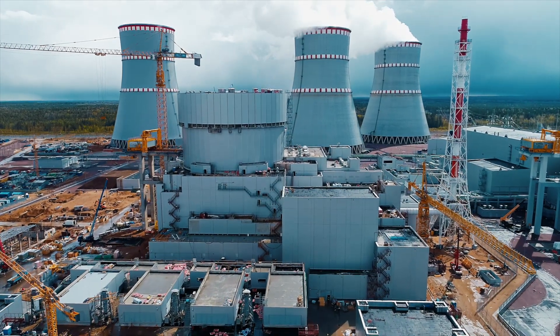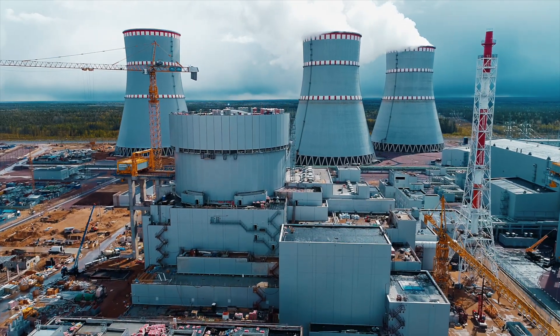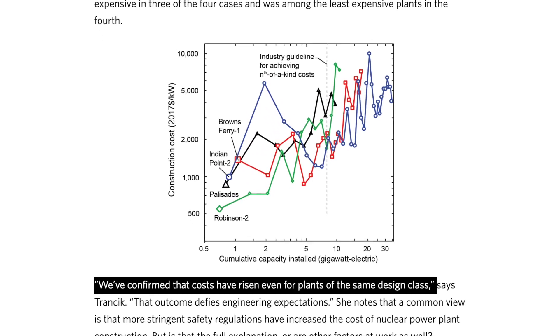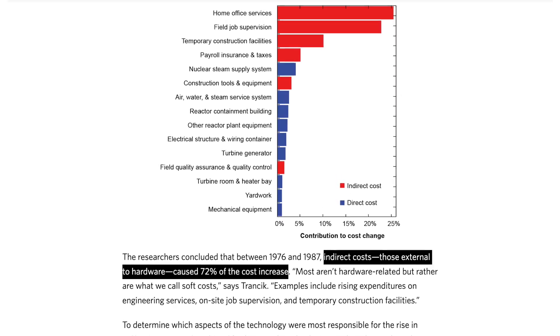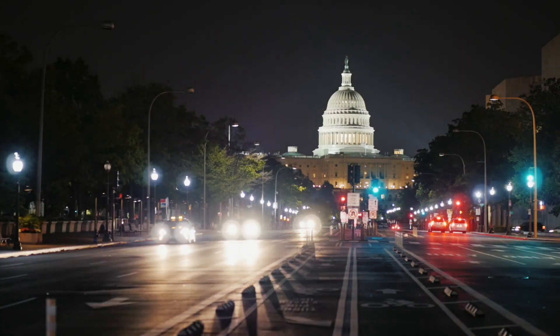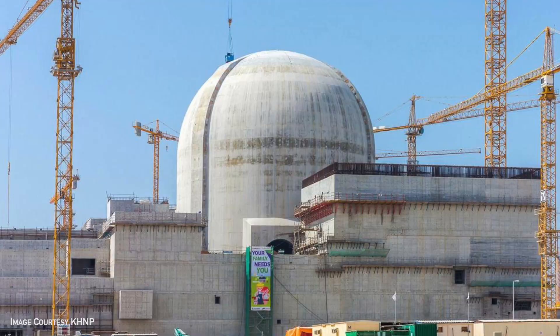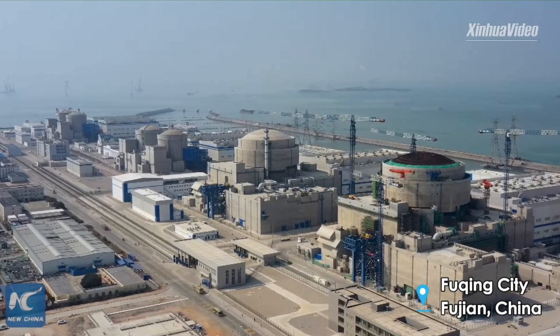Is the increased cost of construction solely because of safety requirements or regulations? A 2020 report by MIT reviewed several previous studies and found that in the US, constructing the same design of a plant became more expensive over time, outpacing inflation — the cheapest unit built was the first. The US Department of Energy found the largest contributors to increased costs were soft costs like engineering and management, not actual construction materials. Nuclear power has become so difficult and expensive that very few Western countries are willing to pursue large-scale construction, though Russia, South Korea, and China are able to build reactors at much more competitive prices.